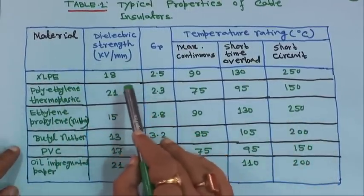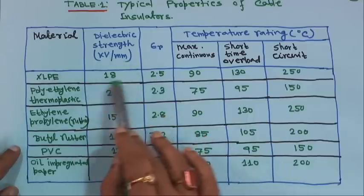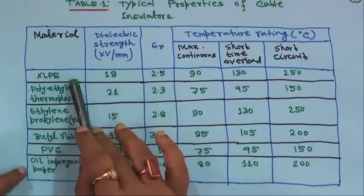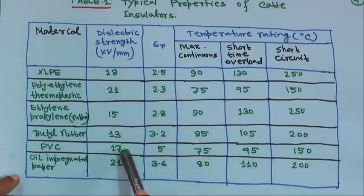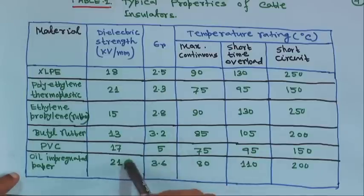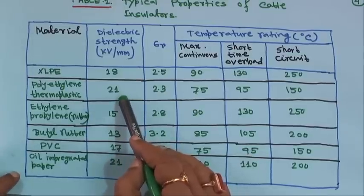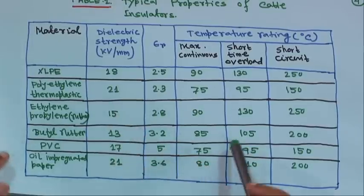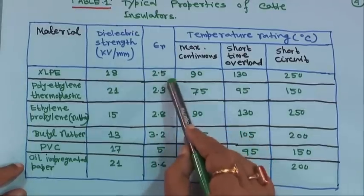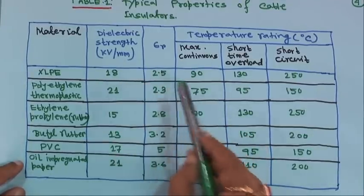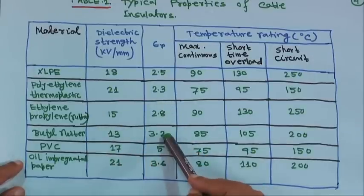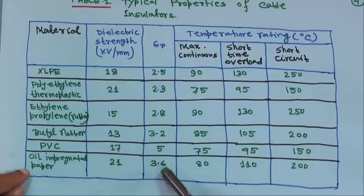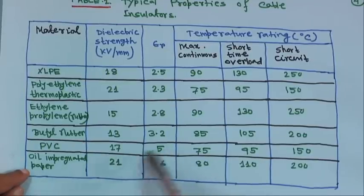Dielectric strength in kV/mm: XLPE is 18, polyethylene thermoplastic is 21 (maximum), ethylene propylene is 15, butyl rubber is 13, PVC is 17, and oil-impregnated paper is 21. Permittivity: XLPE is 2.5, polyethylene 2.3, ethylene propylene 2.8, butyl rubber 3.2, PVC is the highest at 5, and oil-impregnated paper is 3.6.